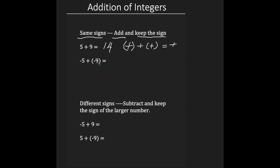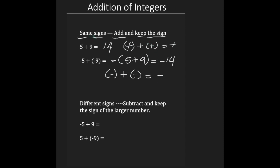When you add two positive numbers, your result should be positive. Here I have negative 5 plus negative 9. Again, if the signs are the same, you will add. So I'm going to add my 5 plus my 9, and I'm going to keep my sign because they're both negative. So my answer is negative 14. Therefore, if you're adding two negative integers, your result should be negative. When your signs are the same, add and keep the sign.